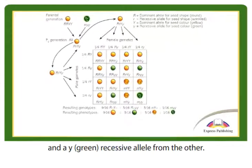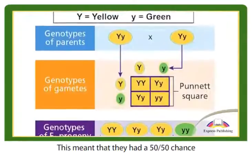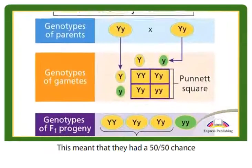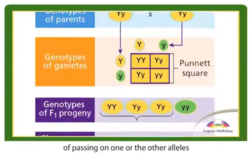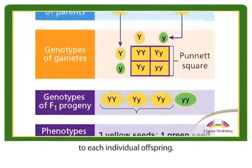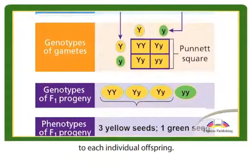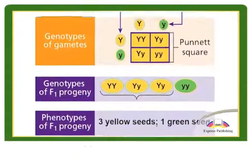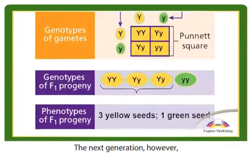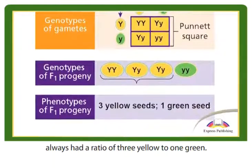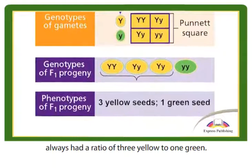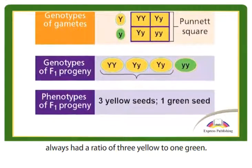This meant that they had a 50-50 chance of passing on one or the other alleles to each individual offspring. The next generation, however, always had a ratio of three yellow to one green.